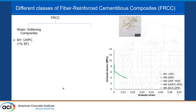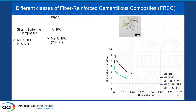The goal of this study is to use different classes of materials to see how their tensile behavior correlates to direct shear behavior. The first material is a strain softening mix using a UHPC matrix with 1% steel fibers — 13 mm straight fibers. The second mix uses the same matrix but with 2% fibers, giving higher tensile strength and better ductility.